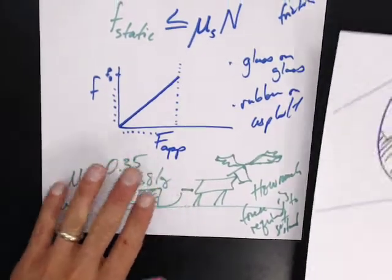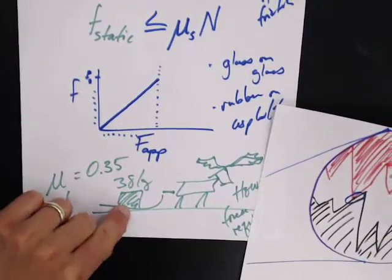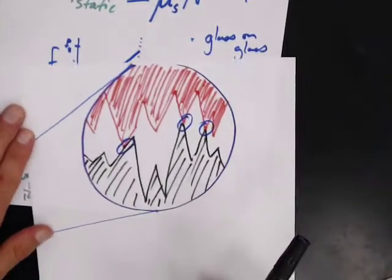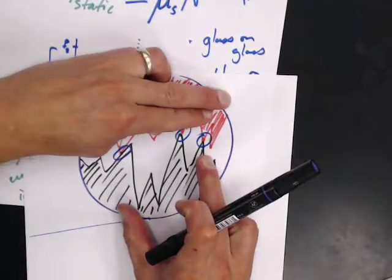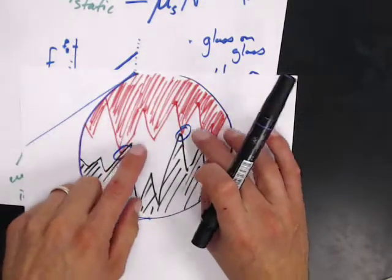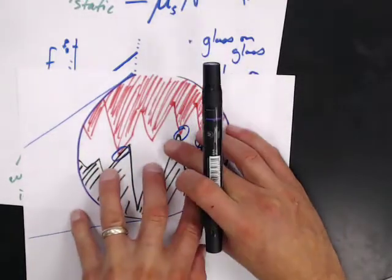But when it does that, remember when we look at that interface right in between here and here, it looks like this. And once that sled starts moving, these little pieces break off and the interchange changes.